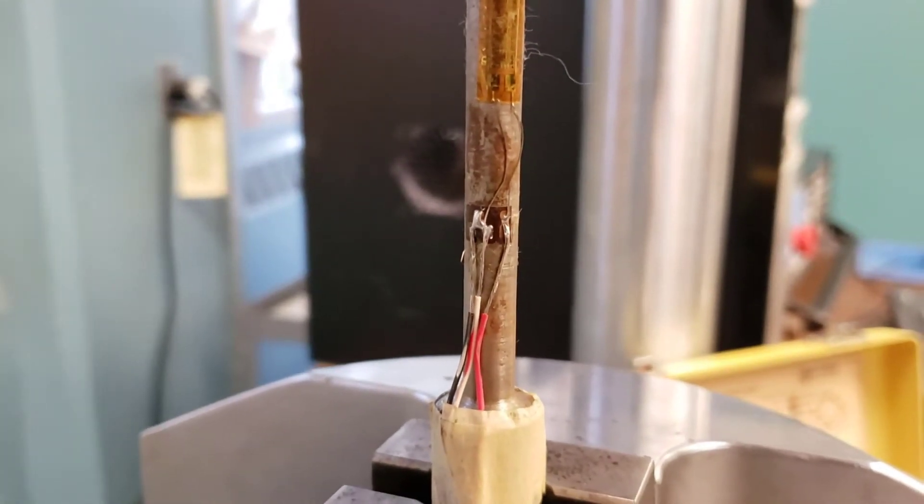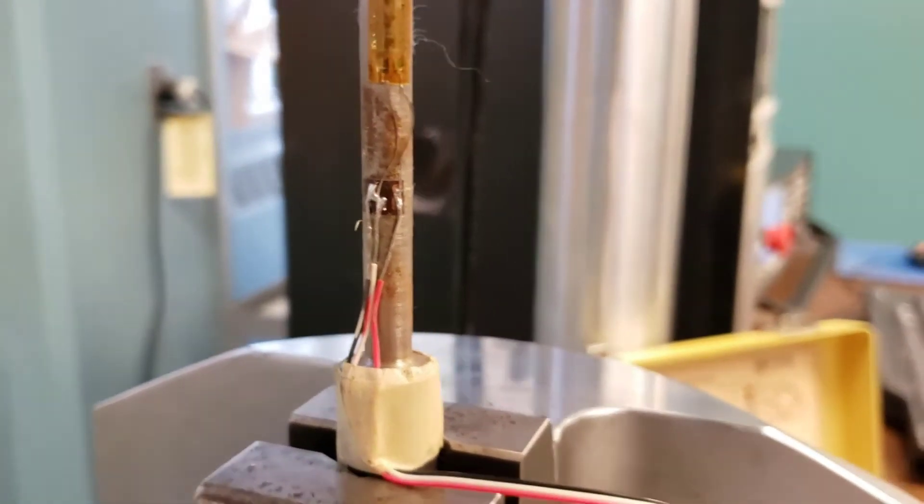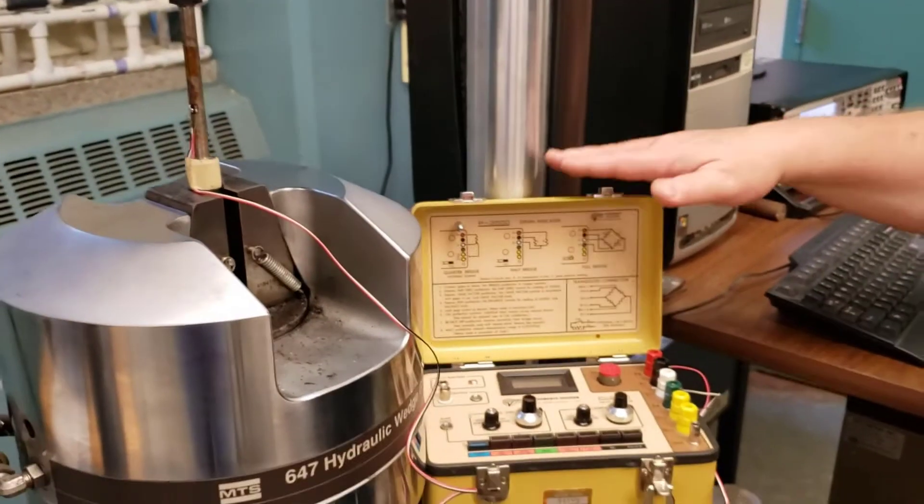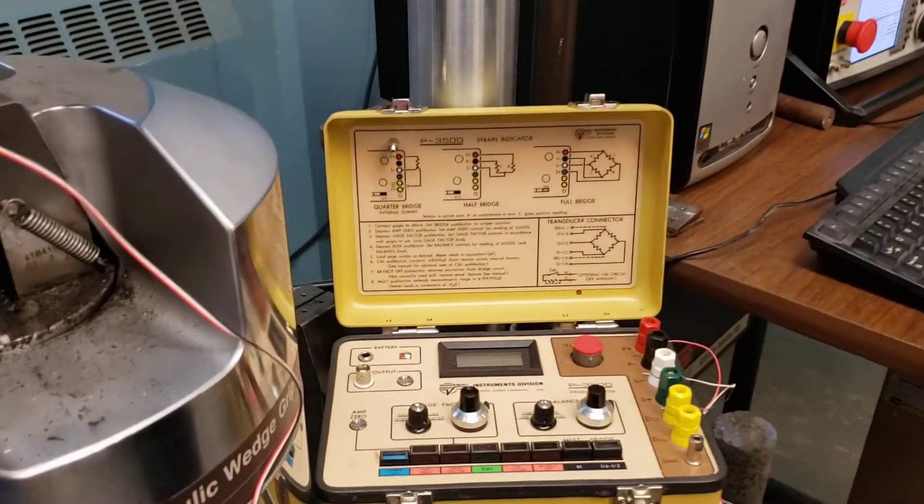When you get to Mech 130 and Mech 210, you will learn about the inner workings of the strain gauge. For mechanical purposes, you just need a reader to read that electronic signal, and this machine does that for us.